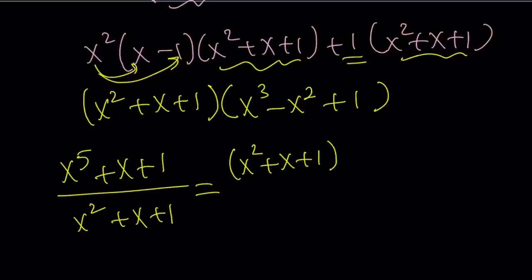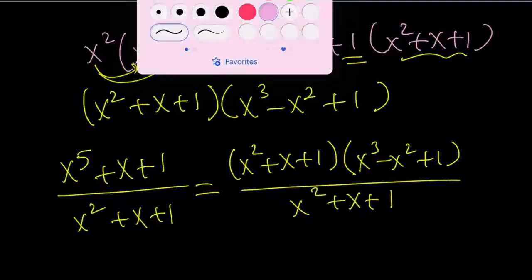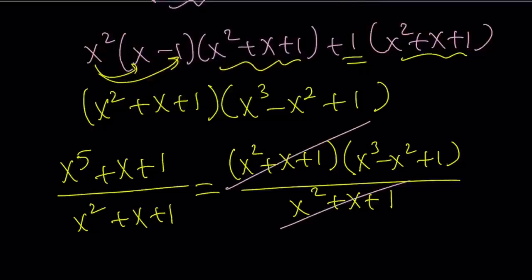So I can now replace the numerator with this, (x squared plus x plus one) multiply by (x cubed minus x squared plus one), and the bottom just stays the same, and guess what? We have x squared plus x plus one cancel out, and we end up with the answer.